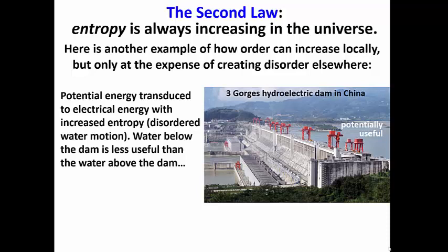That is, the water will experience an increased disorderly random motion as it flows through the dam, so that down in the stream bed the water will be in much greater motion than it was at the top of the dam. The water at the bottom of the dam, I think we would all agree, is less potentially useful than the water above the dam.